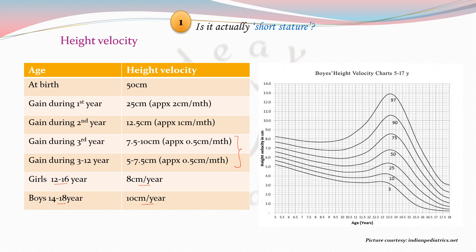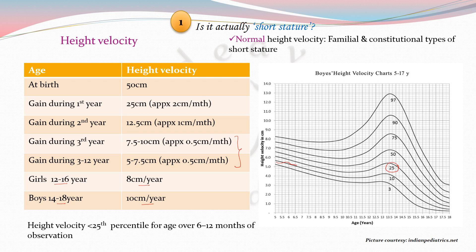This is the height velocity chart for boys between 5 to 17 years of age. Suppose the height velocity curve of a child falls below the 25th percentile — this child should also be considered short statured. Remember, this velocity curve can be plotted over a period of at least 6 to 12 months. The height velocity cutoff is less than the 25th percentile. Normal height velocity is seen in physiological types of short stature like familial and constitutional, while a slow or decreased height velocity is seen in conditions like growth hormone deficiency.